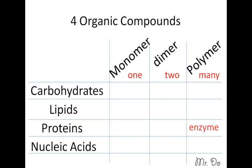For example, a polymer of proteins is an enzyme. For nucleic acid, it's DNA, and the rest of them, we'll learn about them later.